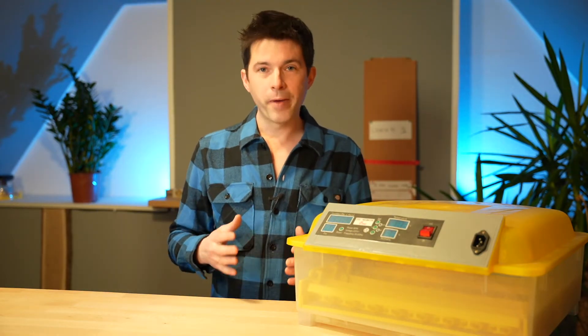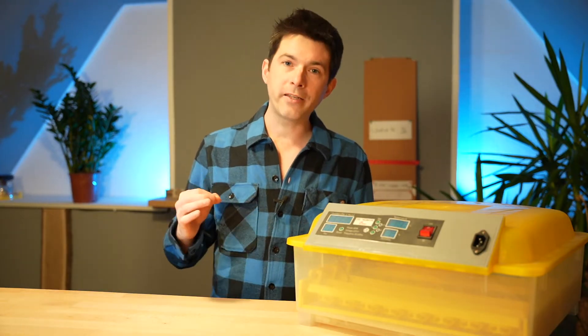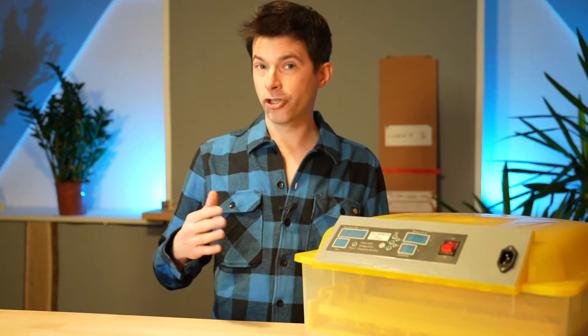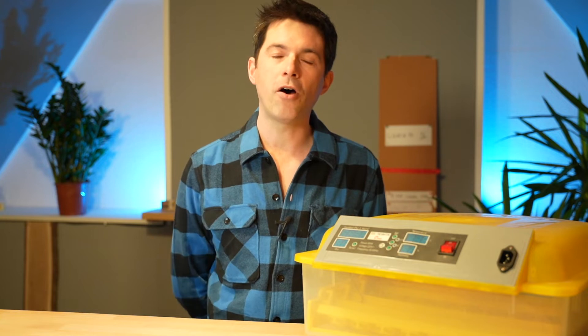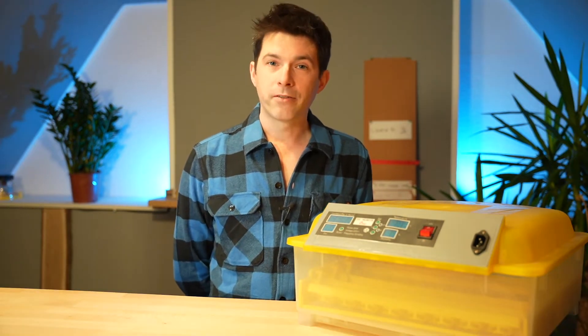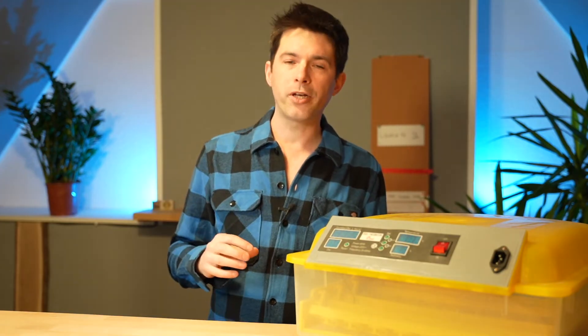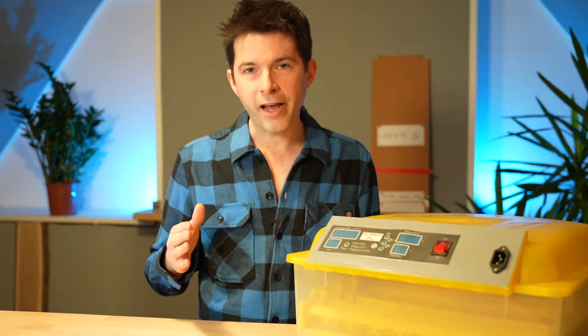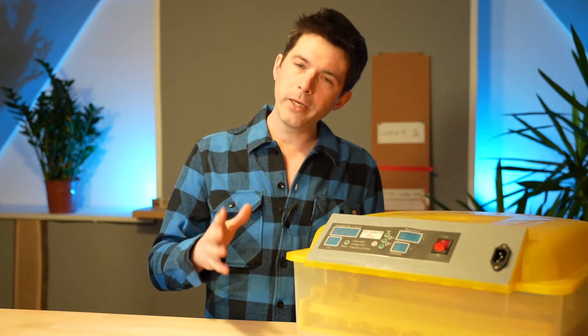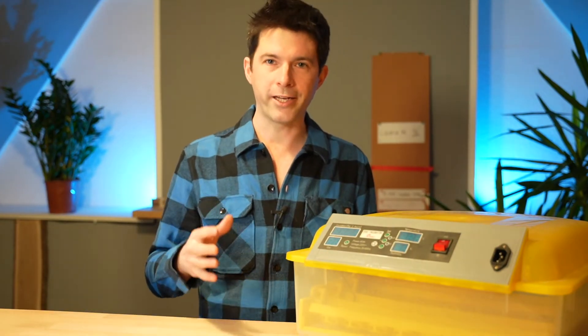First of all you have to make sure to match the right temperature for incubating eggs. If we consider incubating chickens then we need for the first 19 days a temperature of 37.8 degrees and in the last two days we need to lower the temperature to 37.5 degrees. This is really important to get a good hatching rate.